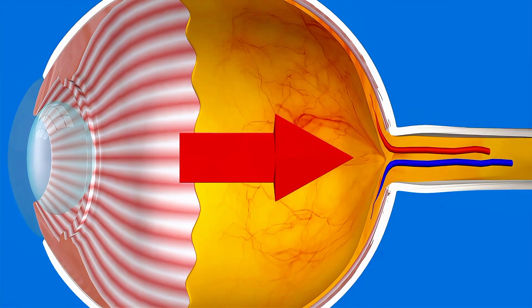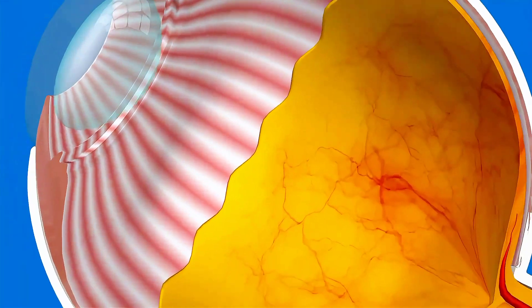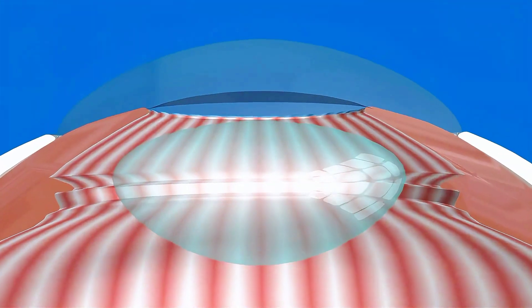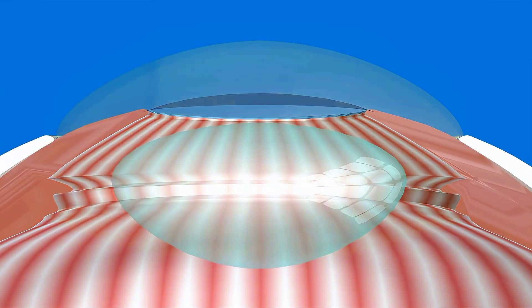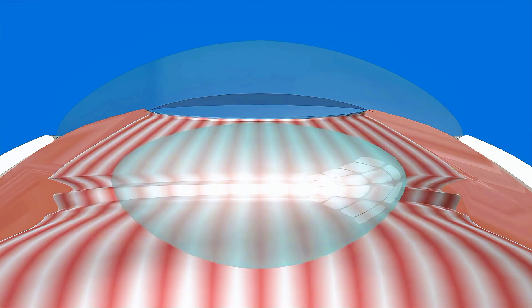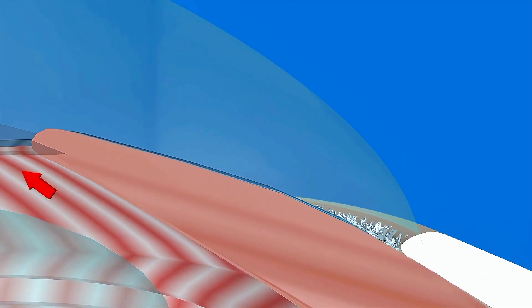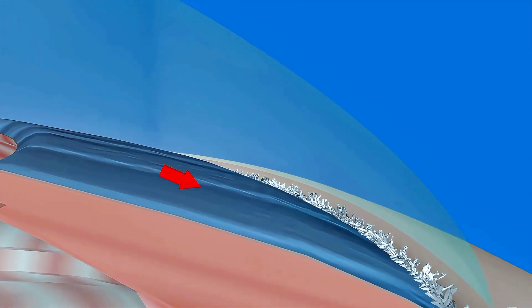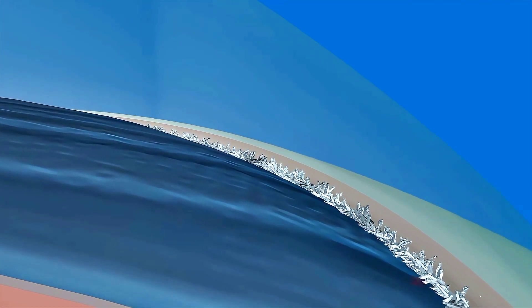Your eye is divided into two chambers: the anterior chamber at the front of the eye and the posterior chamber at the back. A fluid called the aqueous humor is produced by the ciliary body and circulates between the two chambers to clean and nourish your eye.